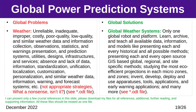Global Problem — Weather: unreliable, inadequate, improper, costly, poor quality, and low quality weather data and information collection, observations, statistics, and warnings; presentation and prediction systems, utilities, designs, infrastructures, and services; absence and lack of data, information, standardization, unification, localization, customization, personalization, and similar weather data, information, warning, and forecast systems, etc. Global Solution — Global Weather Systems: learn, archive, and teach all available data, information, and models; present open-source GIS-based global, regional, and site-specific methods; study the most eco-efficient projections in each micro-zone and zone; invent, develop, deploy, and use apparatuses, tools, applications, and early warning applications, and many more.